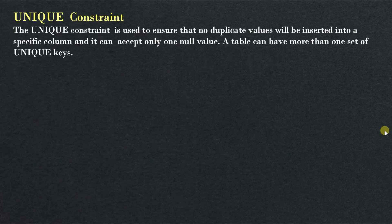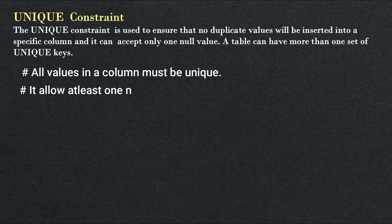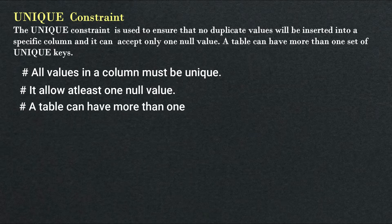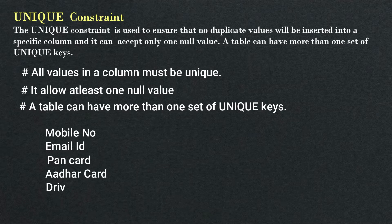In unique constraint, we have to keep three things in mind which are very important. First: all values in a column must be unique. Second: it allows at least one null value — in unique constraint we can enter at least one null value, not more than that. Third, which is very important: a table can have more than one set of unique keys. We can add multiple unique keys in one table, such as mobile number, email ID, PAN card, Aadhaar card, driving license — we can set a unique key in all of these.